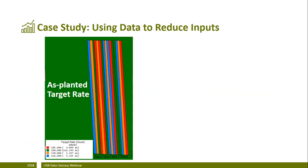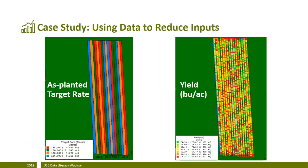As you can see, we had four replications of four different seeding rates ranging from 116,000 seeds per acre to 185,000 seeds per acre. Here on the right are the yield results after that data has been cleaned. It's tough to tell from this visualization which seeding rate is the winner.